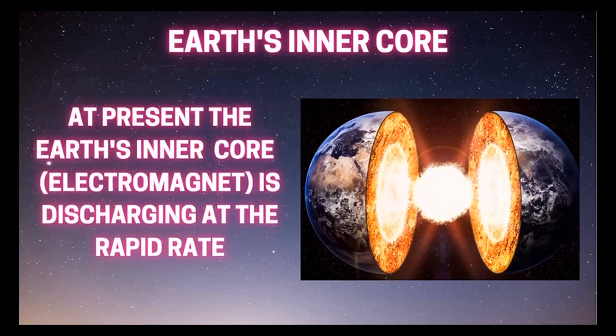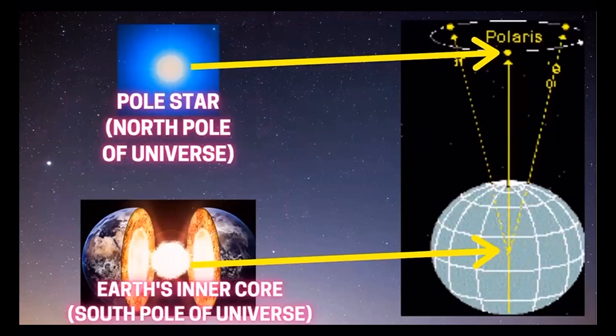At present, the Earth's inner core — that is, the electromagnet — is discharging at a rapid rate. If you see, there is some connection between Polestar, which is the North Pole of the universe, and Earth's inner core, which is the South Pole of the universe.